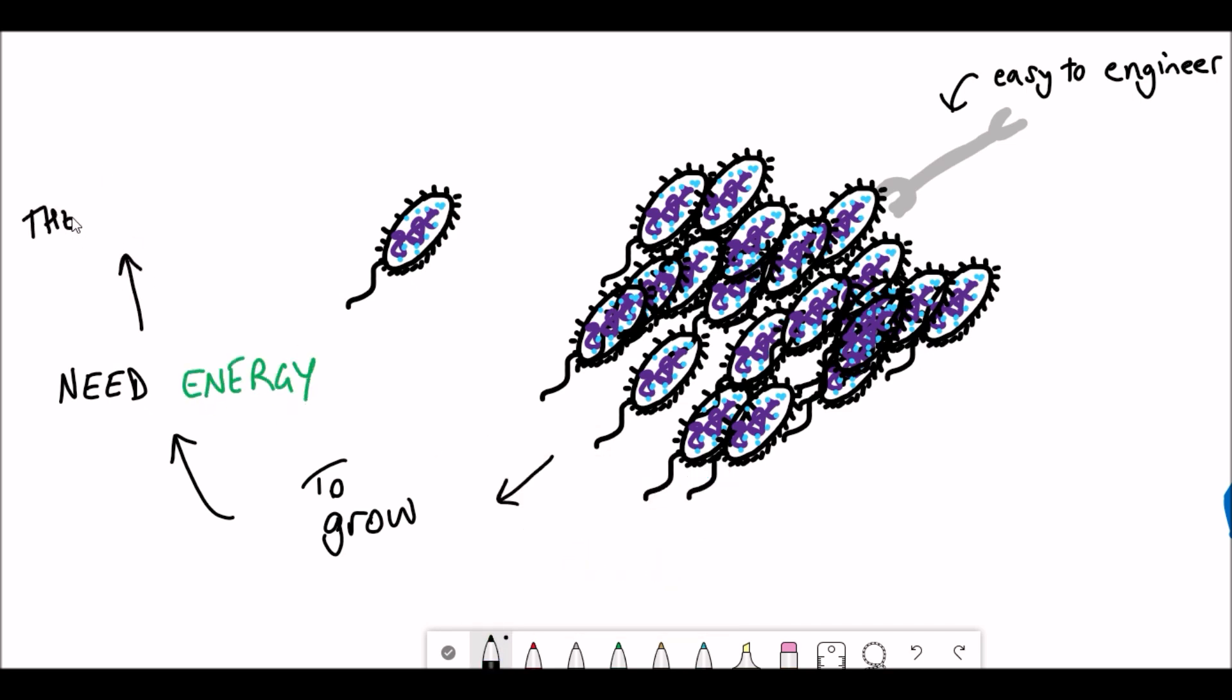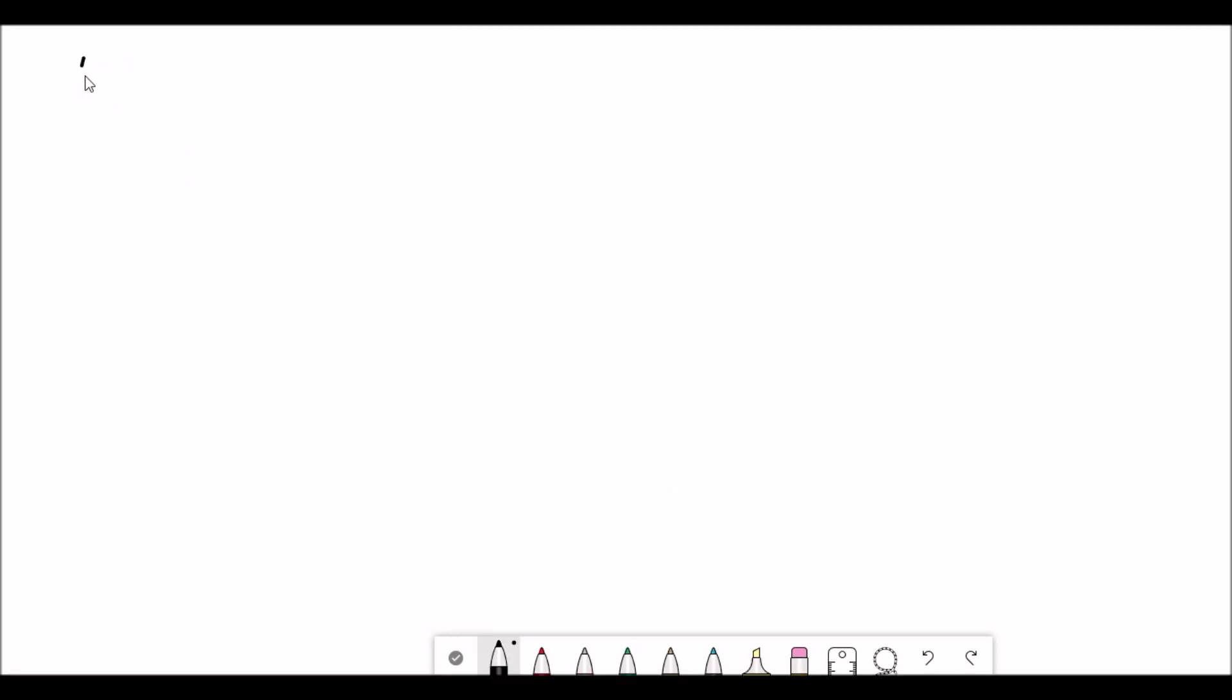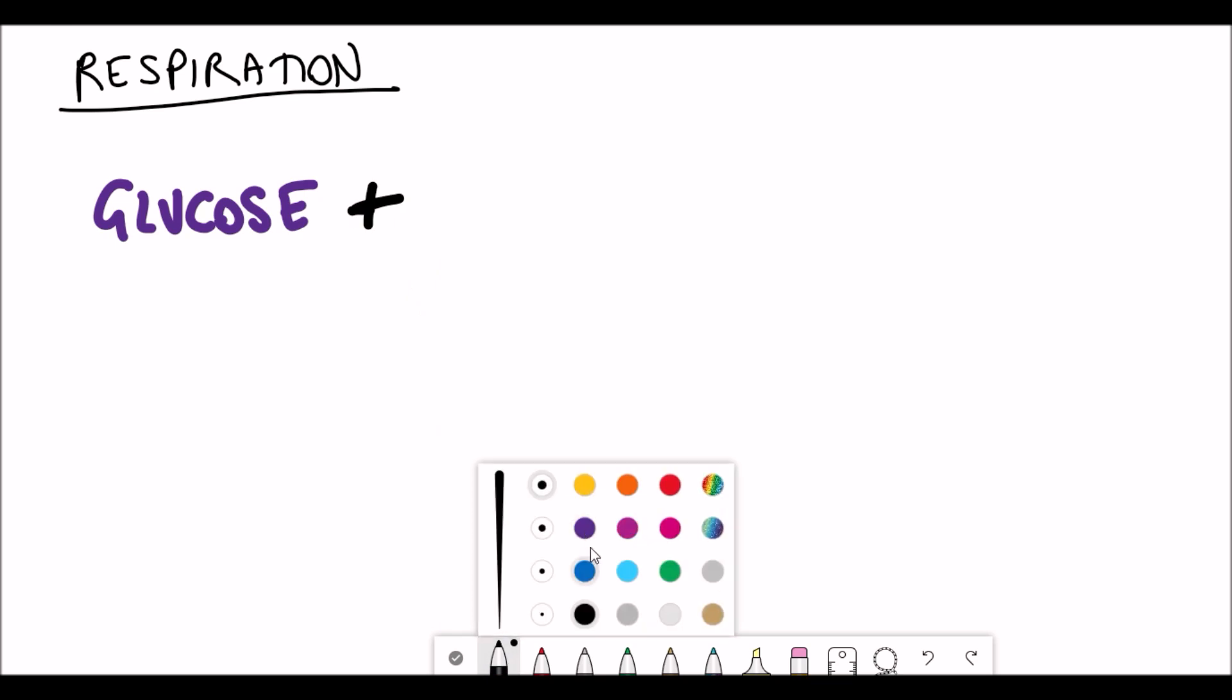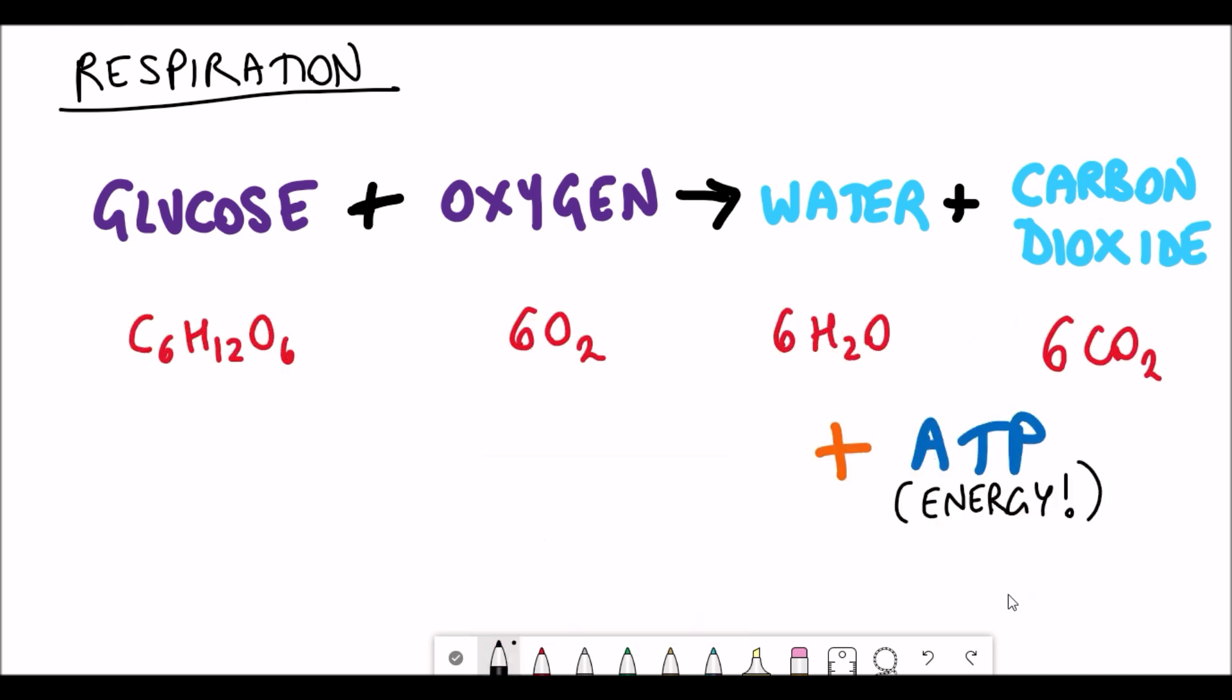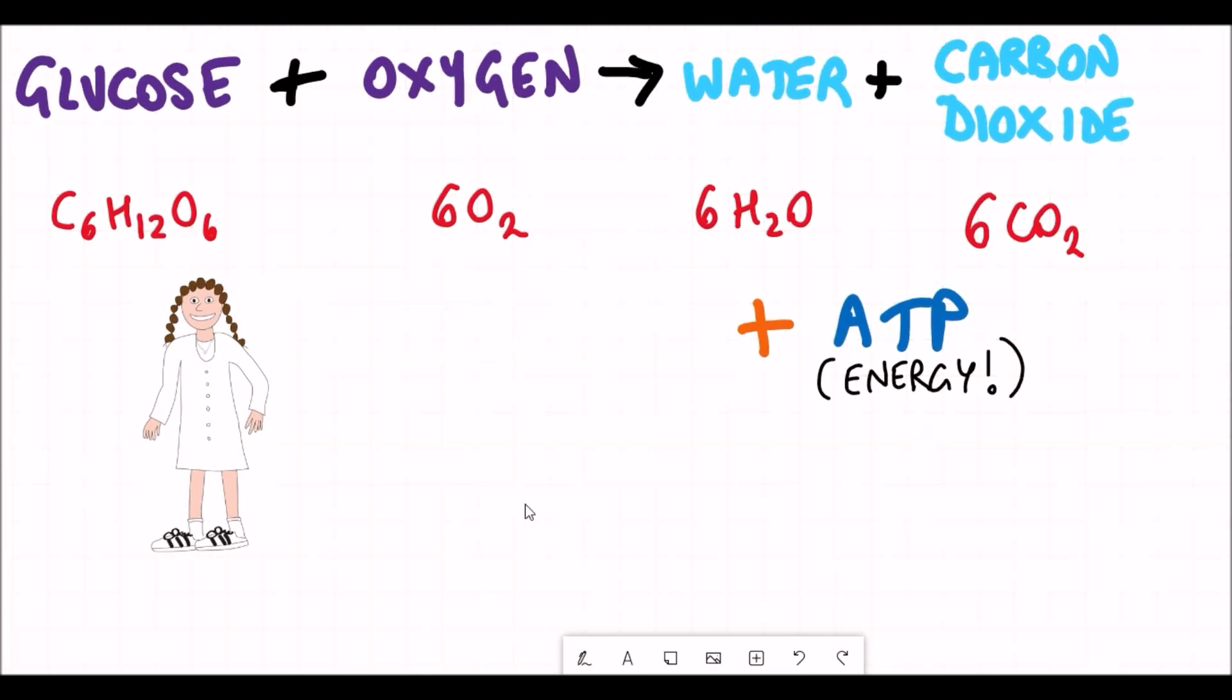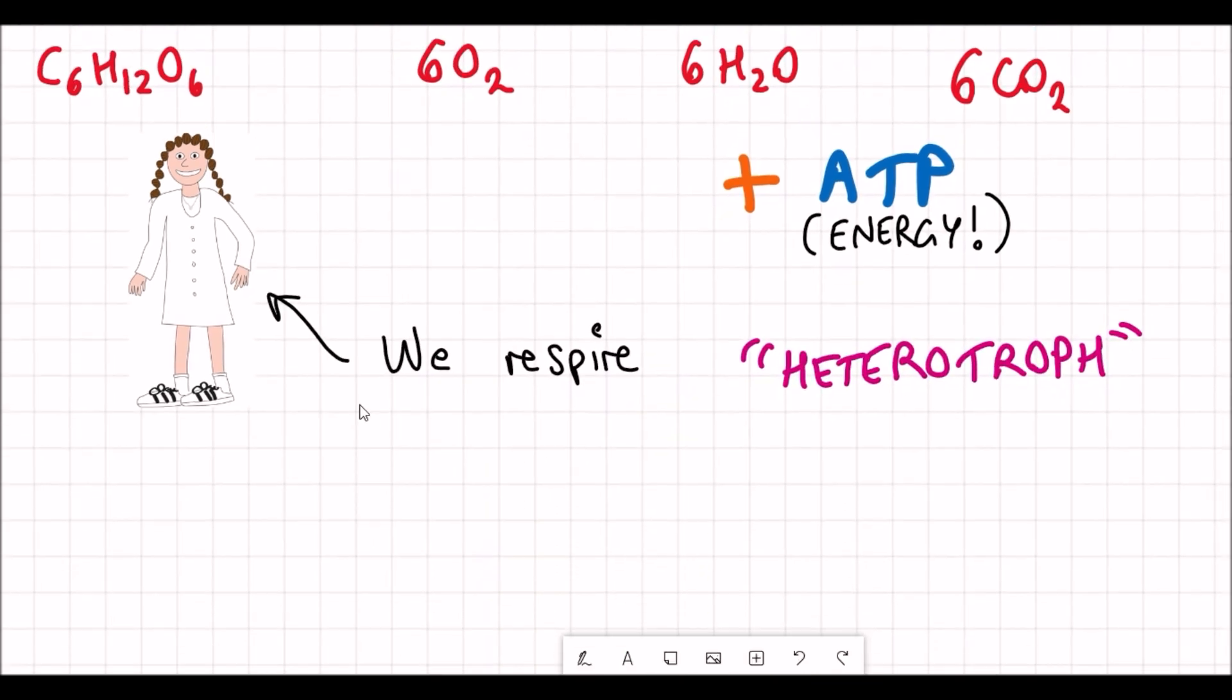Well, bacteria get their energy from respiration. We as humans respire just like E. coli, and the process of respiration takes glucose and oxygen and converts it into water and carbon dioxide. The process of respiration generates ATP which is the energy source that our cells need. As I said, we also respire like E. coli, and also like E. coli we are both referred to as heterotrophs.